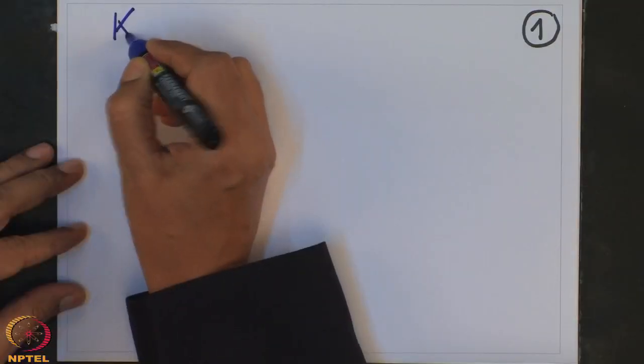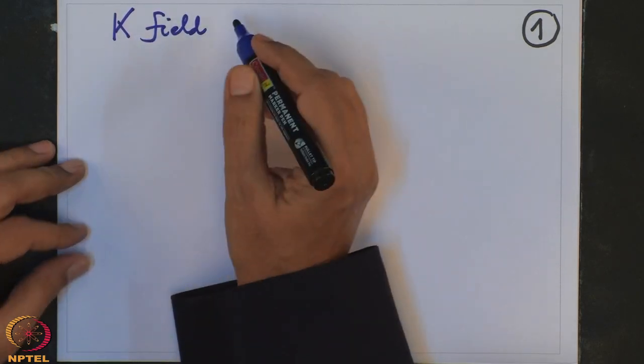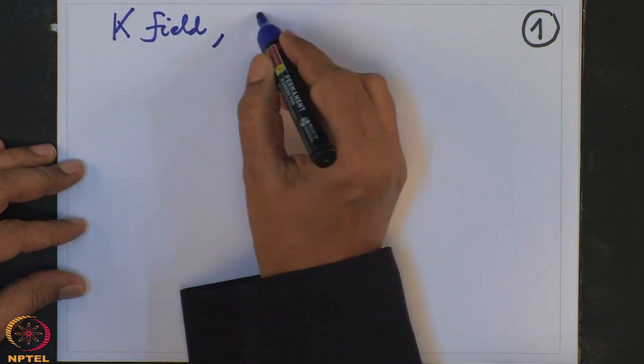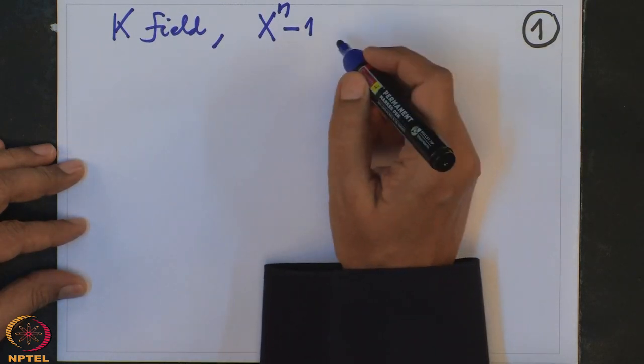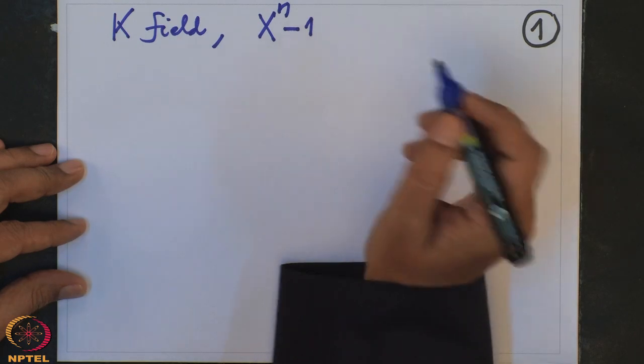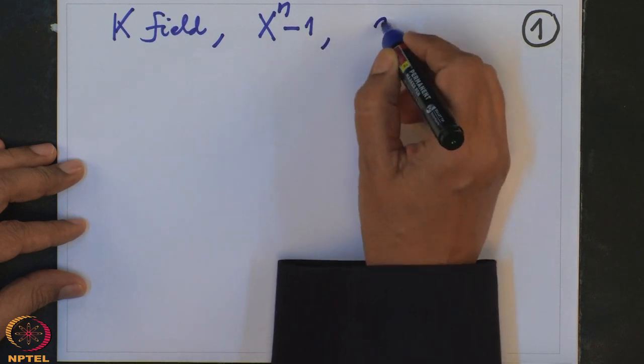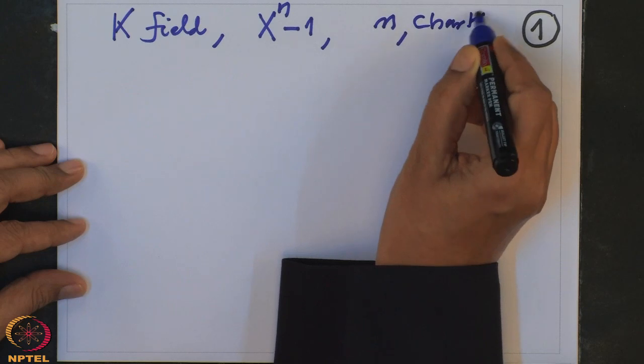In the last lecture we saw roots of unity over an arbitrary field, and we are trying to study the Galois group of the field extension obtained by adjoining a primitive nth root of unity to a given ground field. So let me recall the notation: K is a field and we are studying the polynomial x^n − 1. We decided it is enough to assume that n and the characteristic of K are coprime.